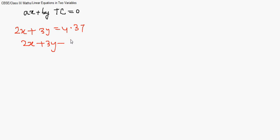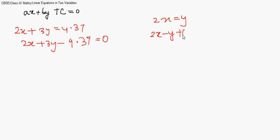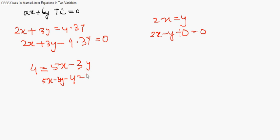So it becomes 2x plus 3y minus 4.37 equals 0. Similarly, if there is 2x equals y, we can write it as 2x minus y plus 0 equals 0 — here c equals 0 — and that is also a linear equation in two variables. One more example: 4 equals 5x minus 3y can be written as 5x minus 3y minus 4 equals 0. Any equation in the format ax plus by plus c equals 0 is a linear equation.